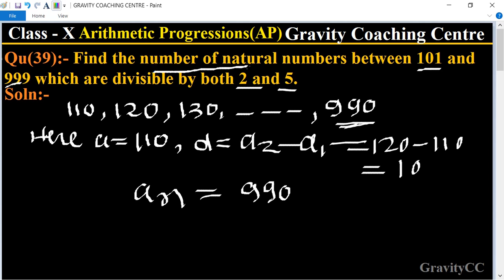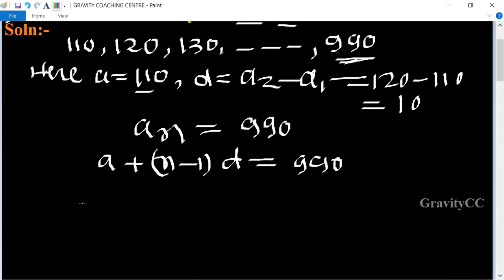So to find the number of natural numbers, a plus n minus 1 times d equals 990. The value of a and d is 110 and 10, so 110 plus n minus 1 into 10 equals 990.